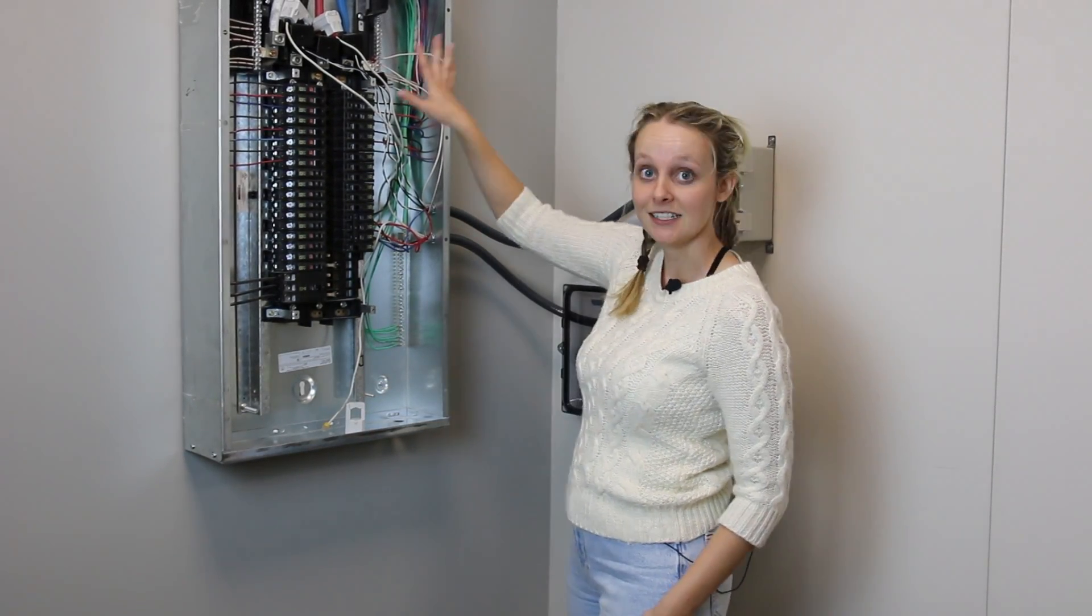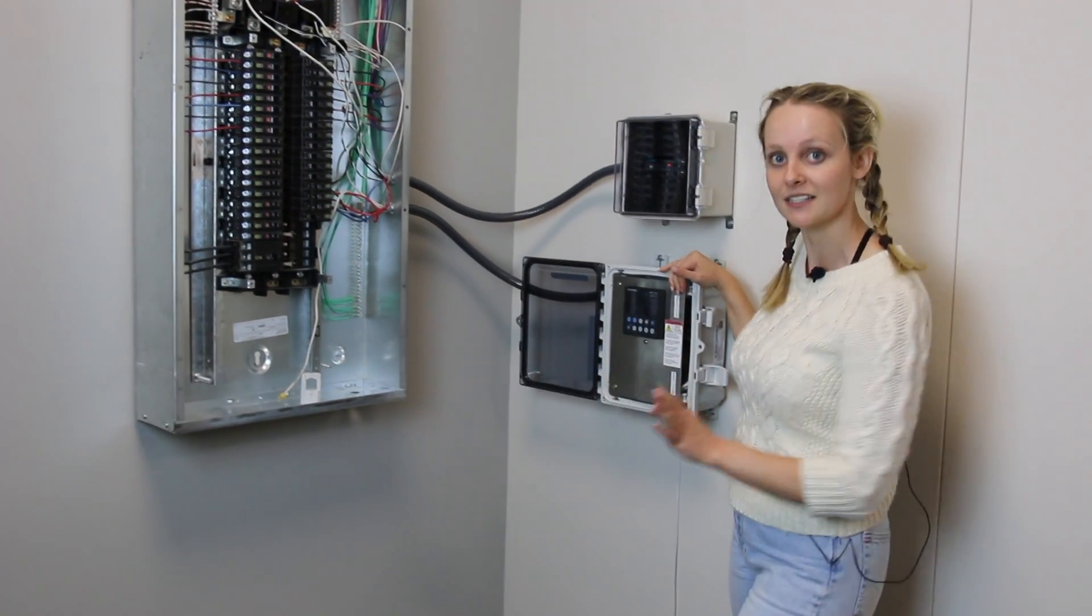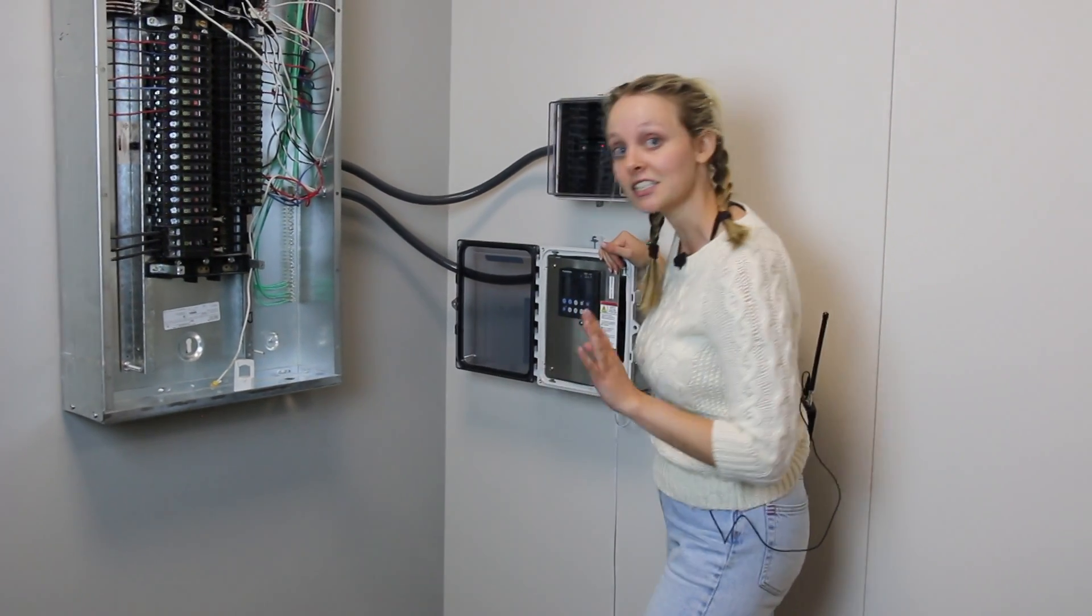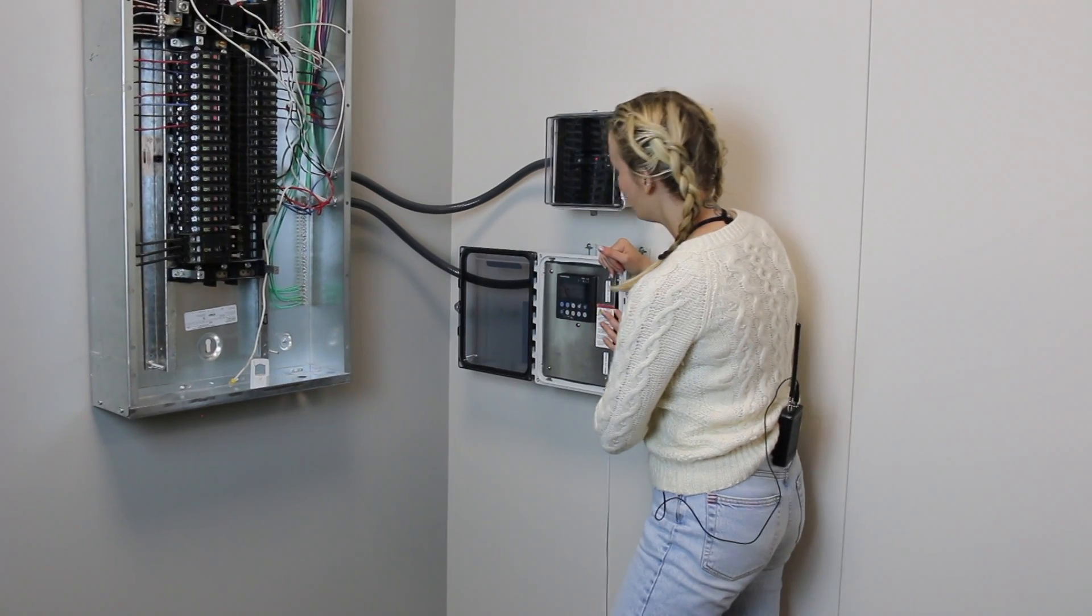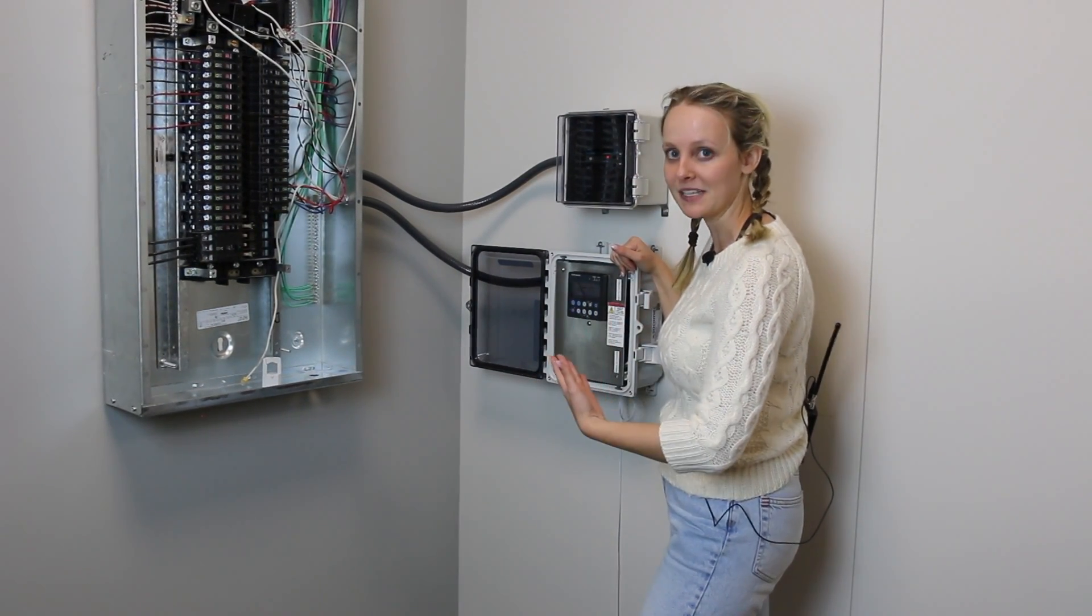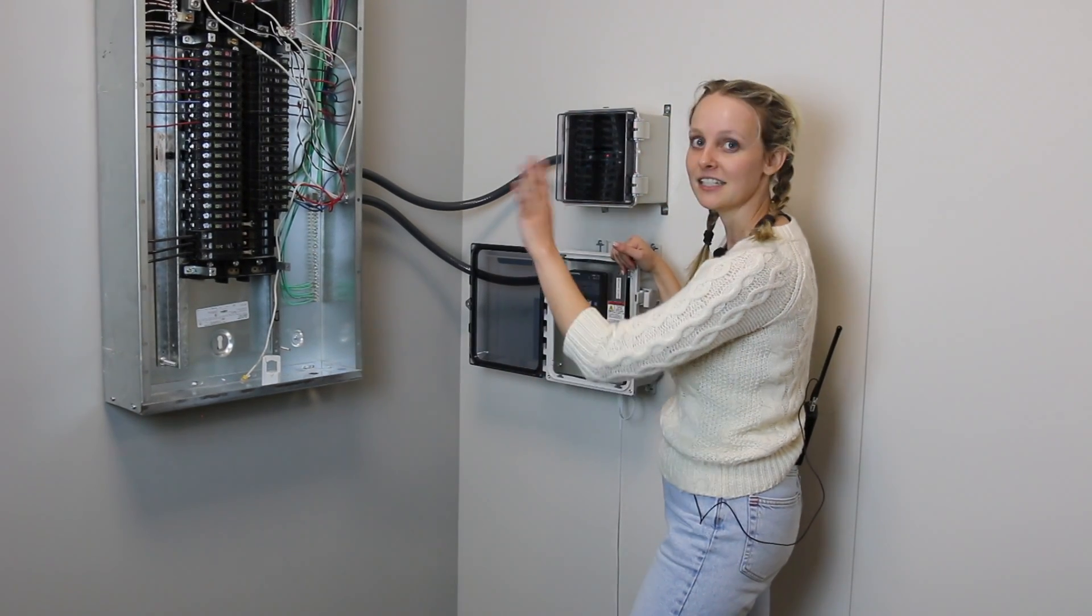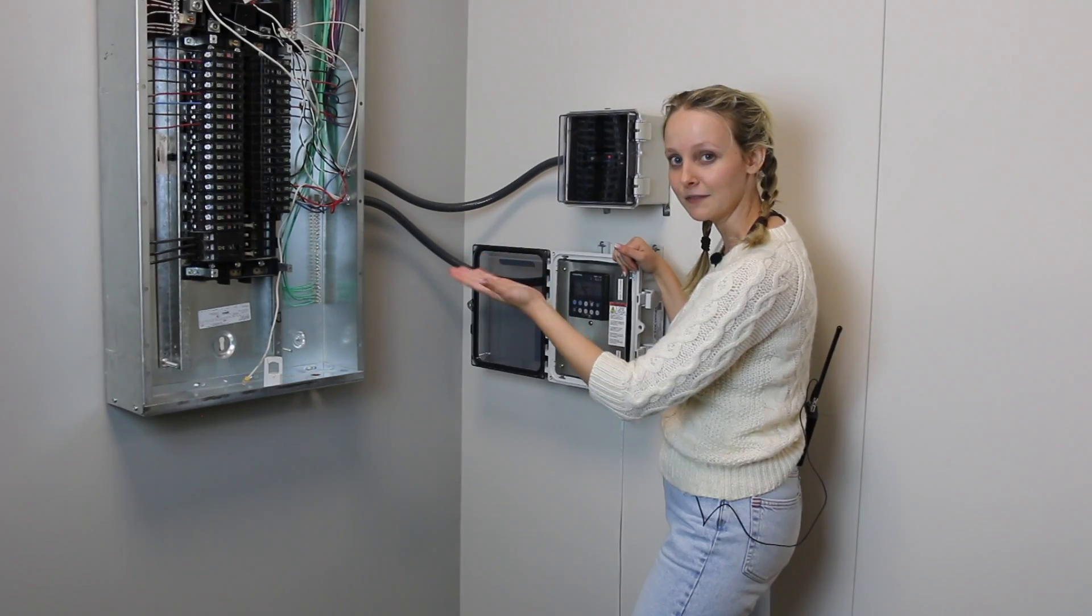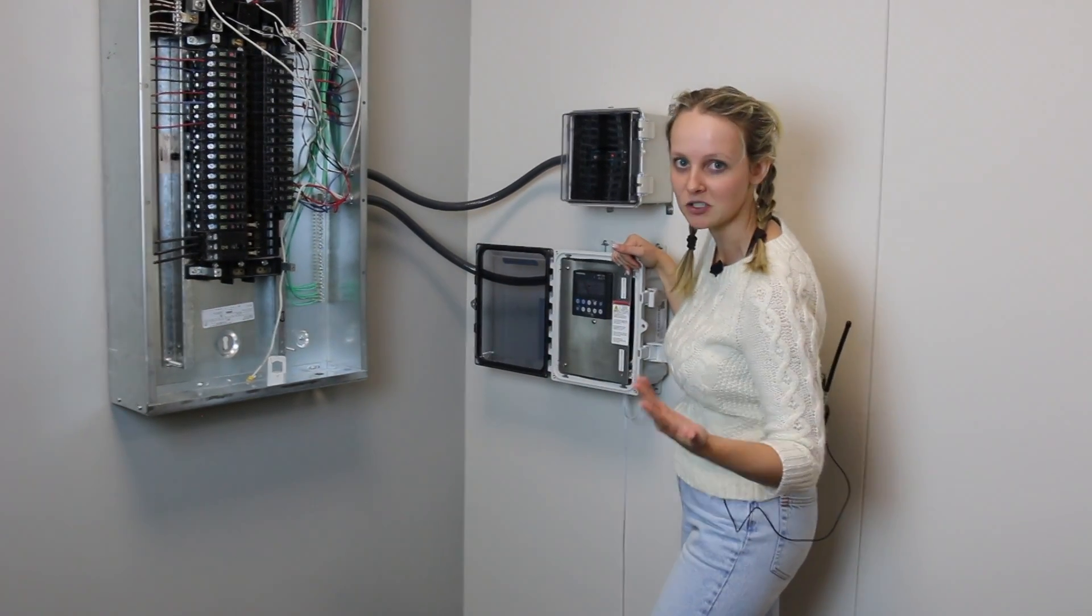Once you get the CTs all set up and connected to your meter, the next thing of course is configuring your meter. This is actually another area the Digibox kit really excels at. It comes with a configuration wizard, so it just walks you through step by step. It also can sense the CT ratios automatically and configure the parameters that way, which means you don't really have to do that much.